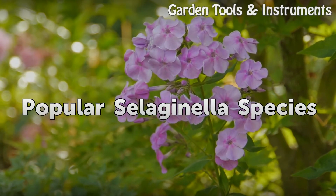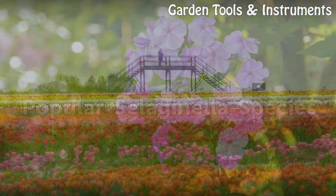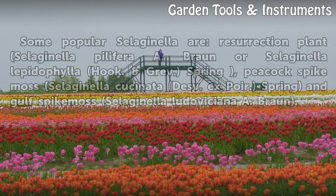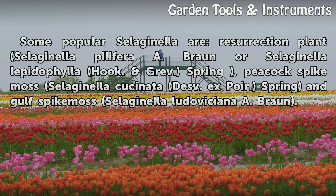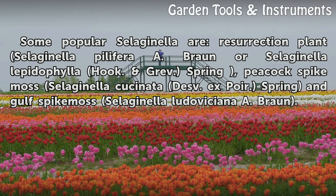Popular Selaginella Species. Some popular Selaginella are: Resurrection Plant (Selaginella lepidophylla); Peacock Spike Moss (Selaginella uncinata); and Gulf Spike Moss (Selaginella ludoviciana).